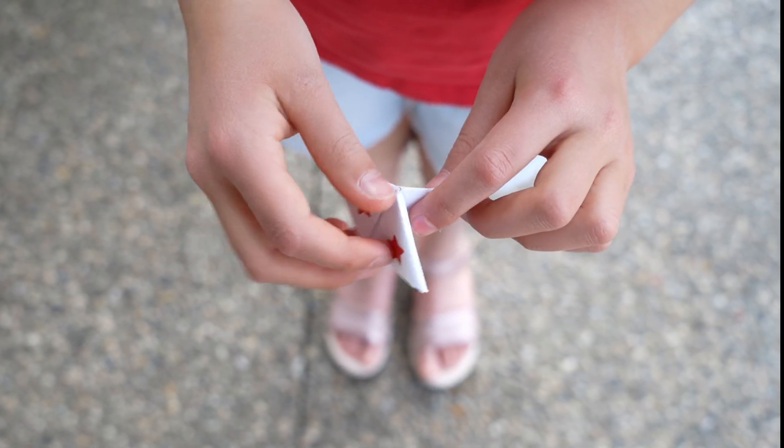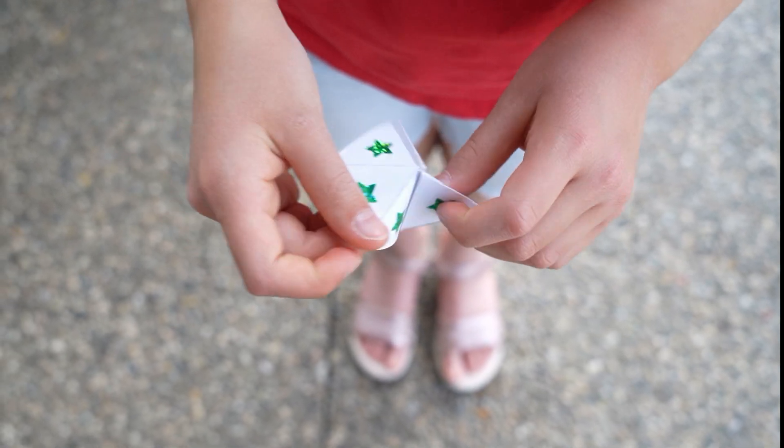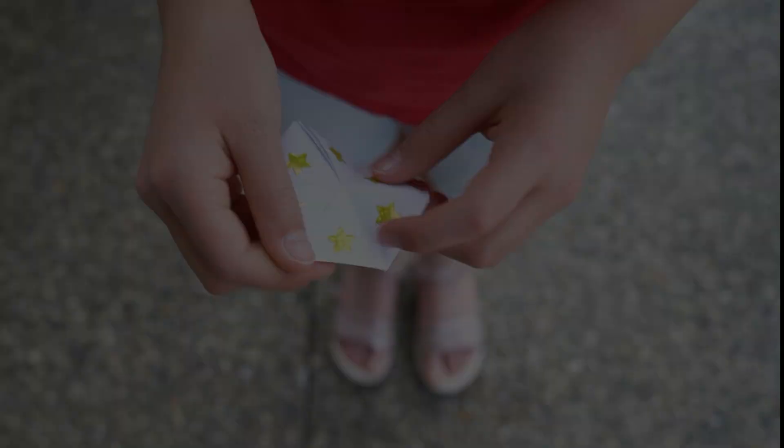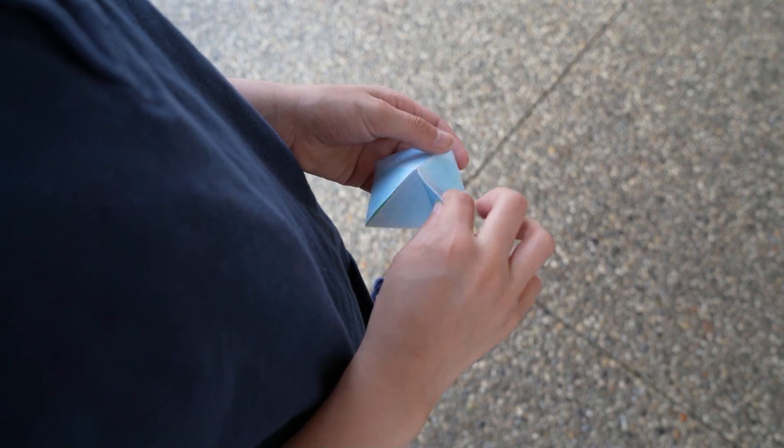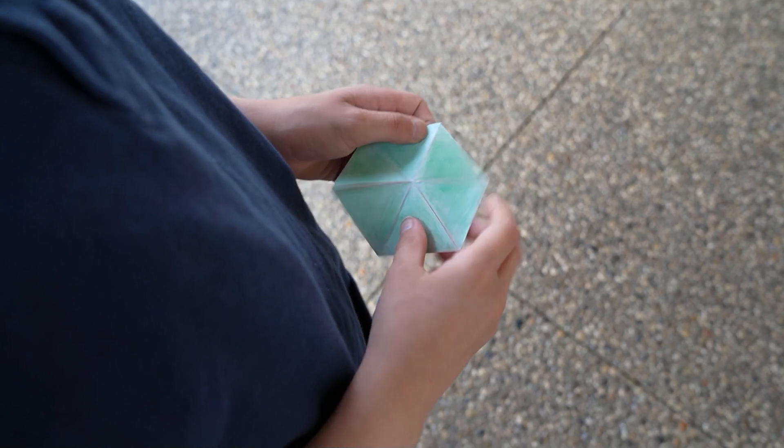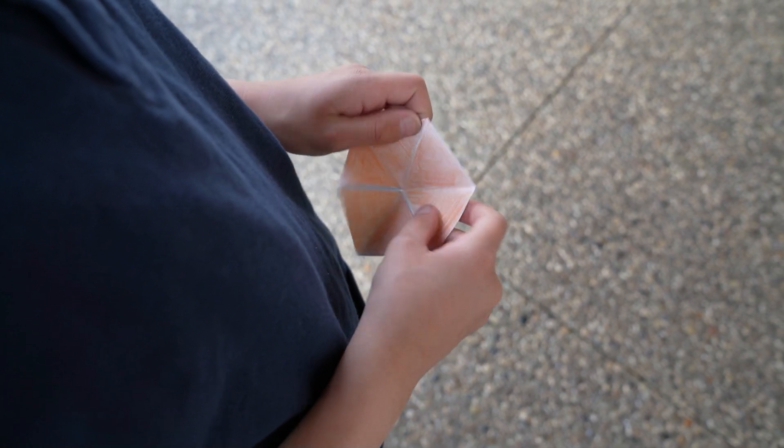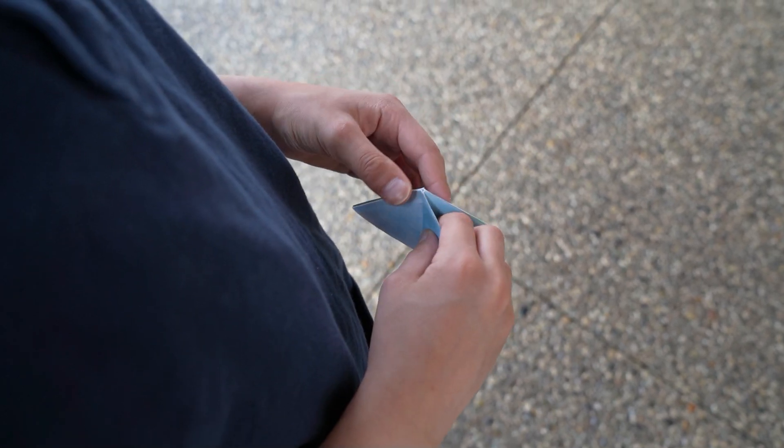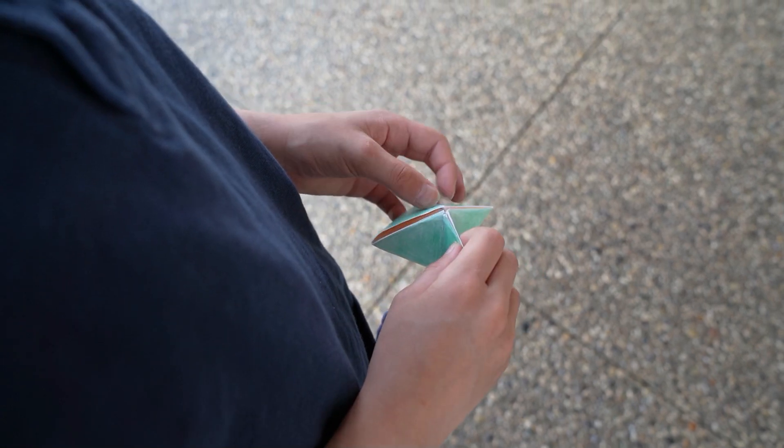In this video we'll look at how to make a hexaflexagon that has 6 different faces. It's called a hexahexaflexagon. If you haven't yet made a 3-faced hexaflexagon, called a trihexaflexagon, I recommend starting there. You can find a link to the trihexaflexagon video in this video's description.